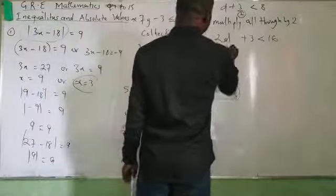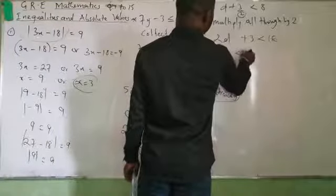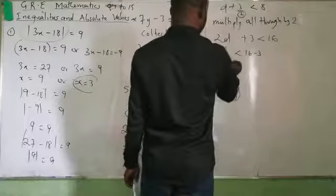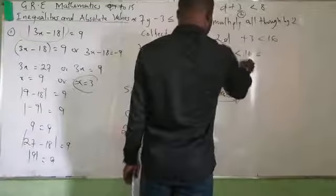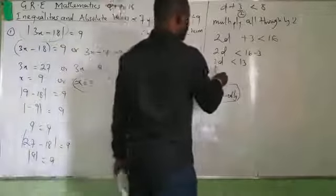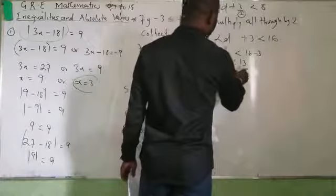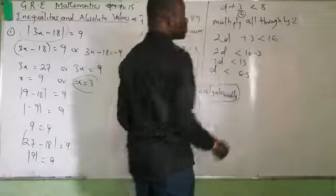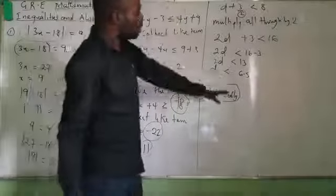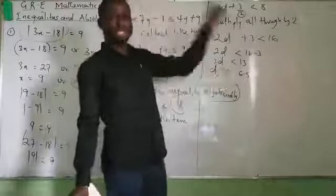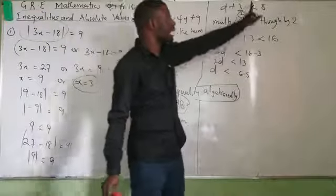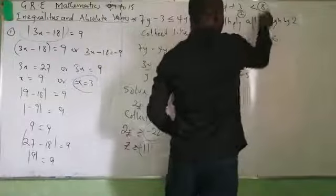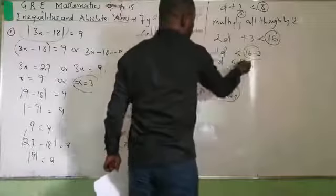Which gives 2D less than 16 minus 3, so 2D less than 13. My D will be less than 6.5, which is 6 and one half. I won't change my inequality sign here because I'm starting from plus and continuing with plus throughout. If I had arrived at minus 6.5, the sign would change from less than to greater than.